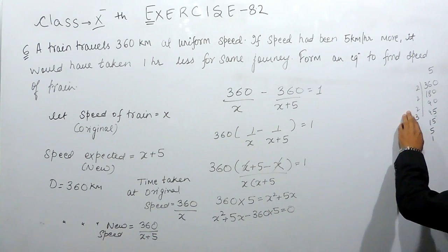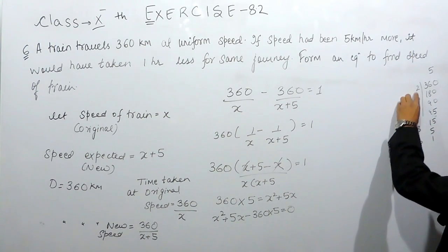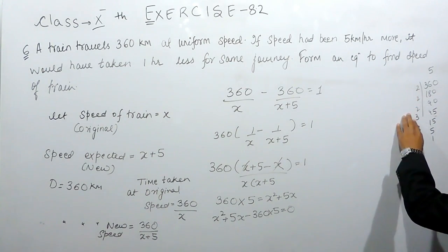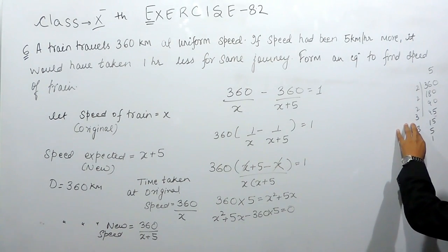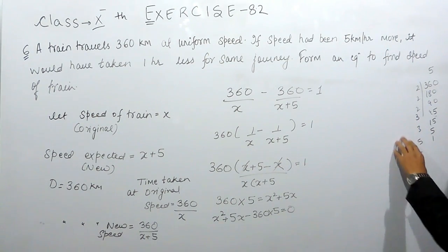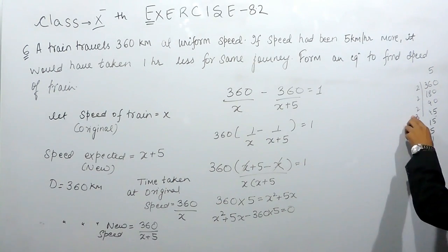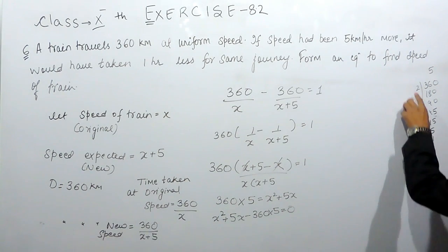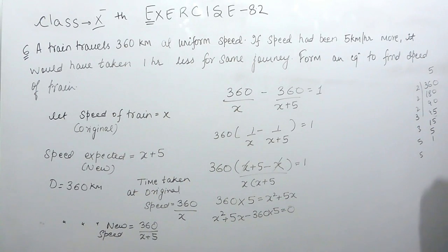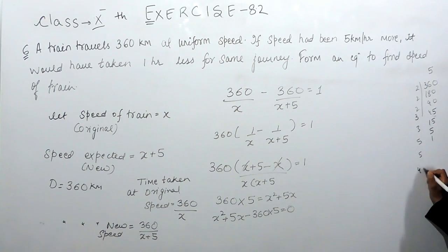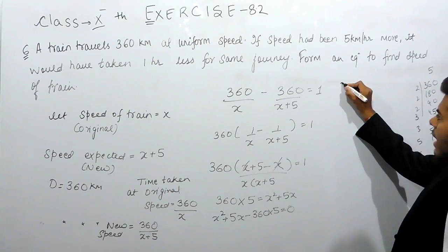So this cannot be there. Now 2 multiplied by 2, 4, 8, 24 and 24, 3, 72 that will again not be there. Now 15, 45 and 8 into 5 is 40, so this can be 45 minus 40.